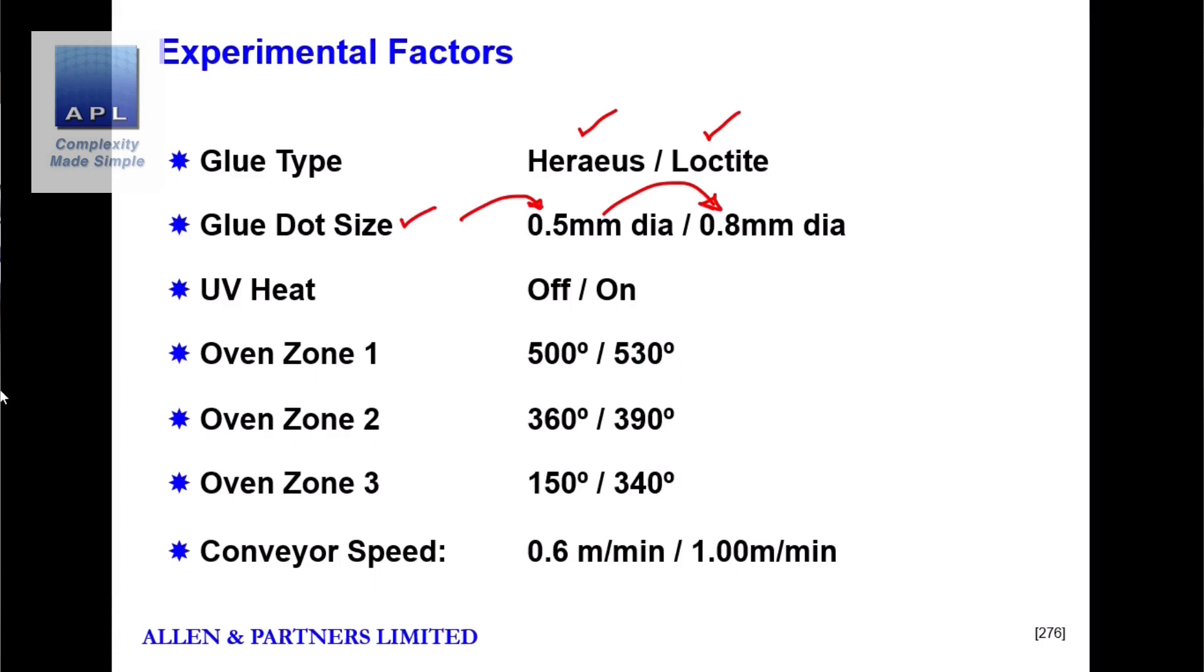So we have glue type, we have dot size, maybe more glue gives us a stronger bond. We've got ultraviolet heat. Now ultraviolet heat is our current solution. We've been advised that if we play ultraviolet light onto the components, we'll get a stronger bond. So we're going to test that on or off. We just want to see if it makes a difference. We're not testing a level. We're not testing strong heat and weak heat. We've gone on or off. Because if it doesn't do anything, we can switch it off and save money.